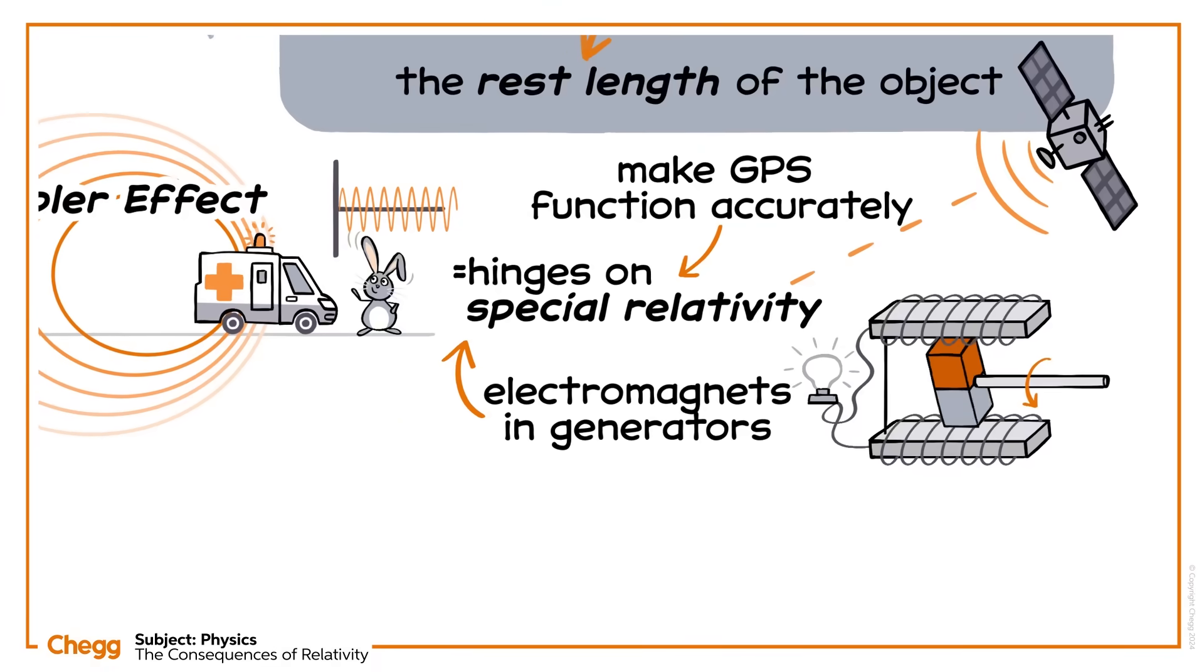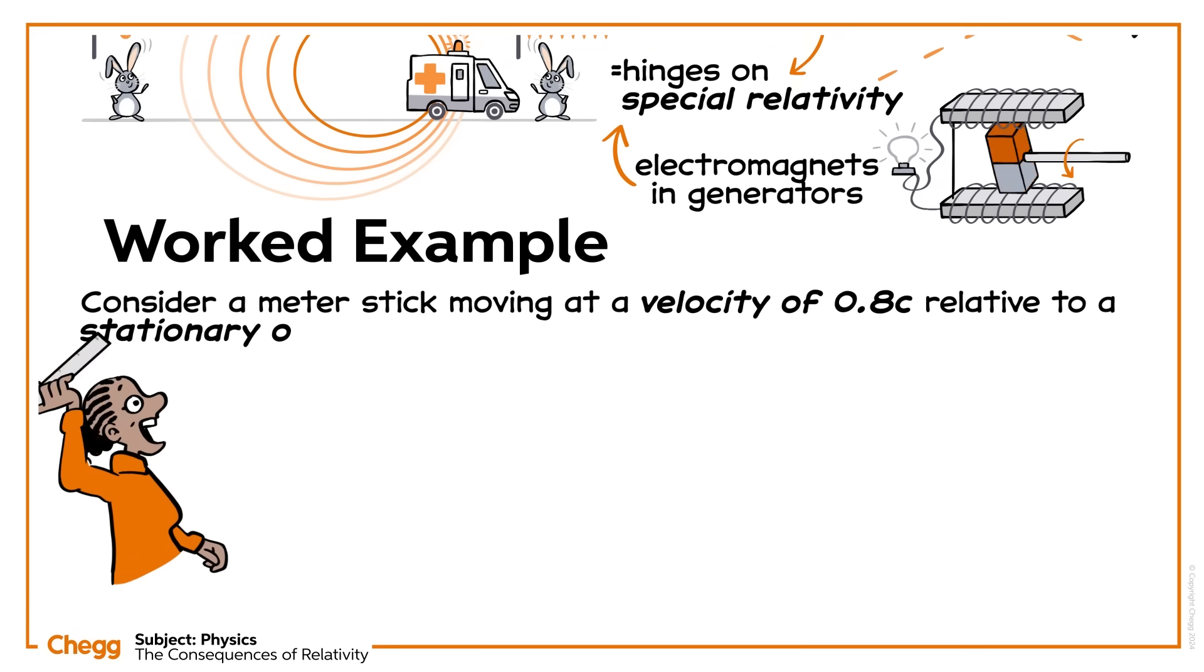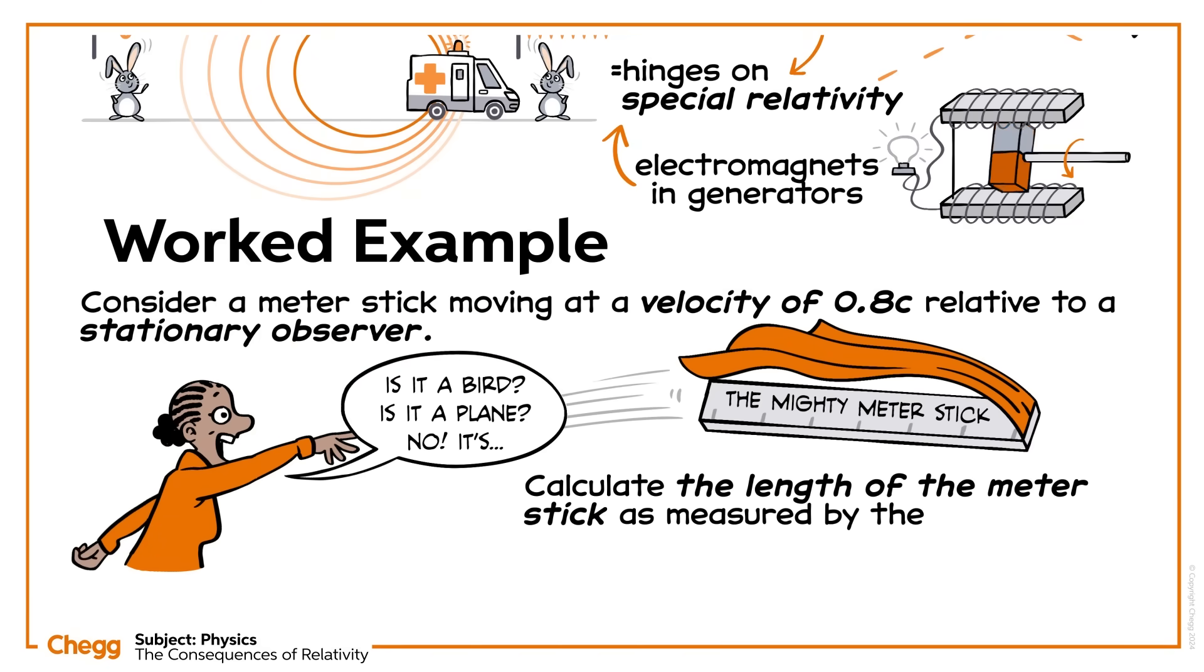Here's a question to put those equations into practice. Consider a meter stick moving at a velocity of 0.8c relative to a stationary observer. Calculate the length of the meter stick as measured by the observer.